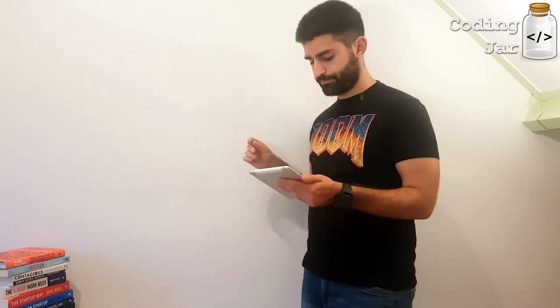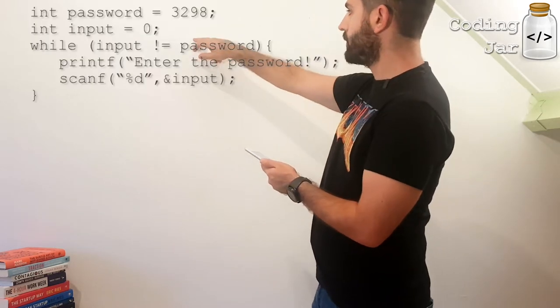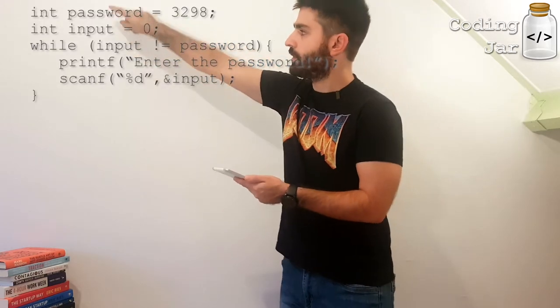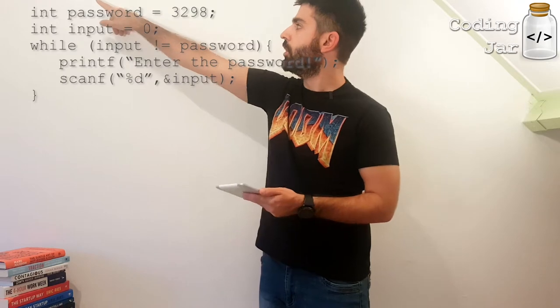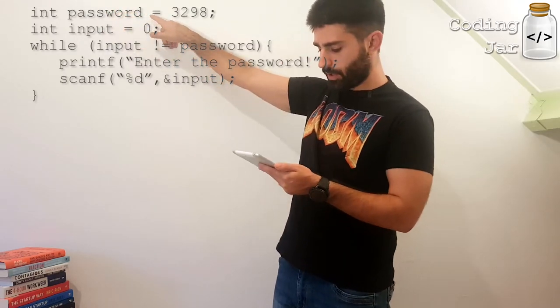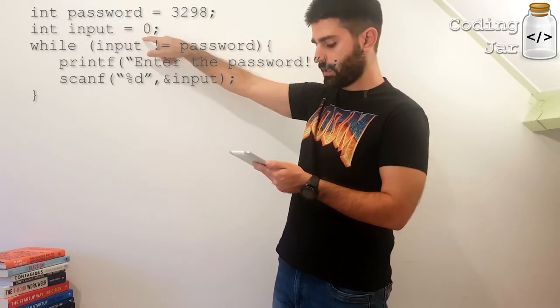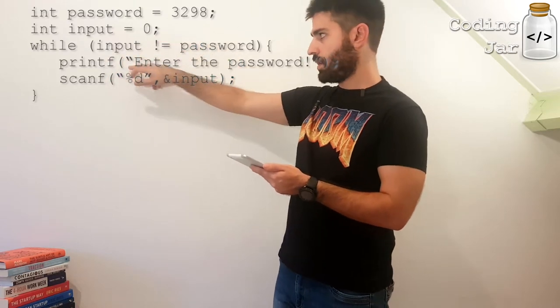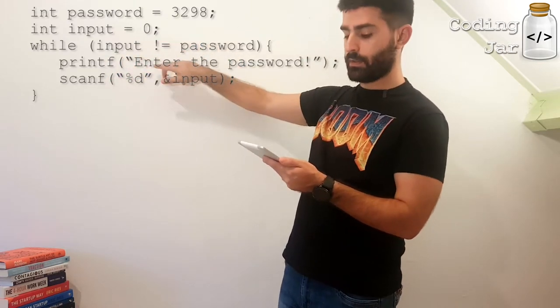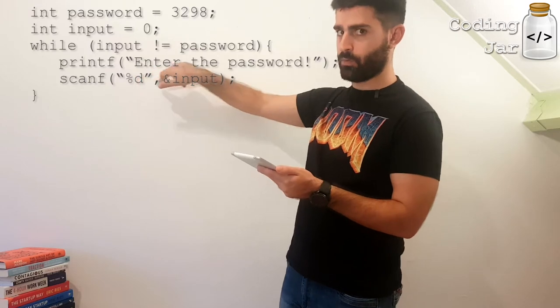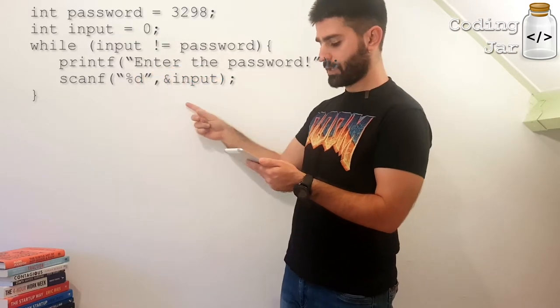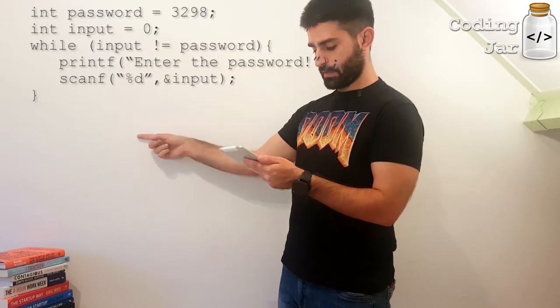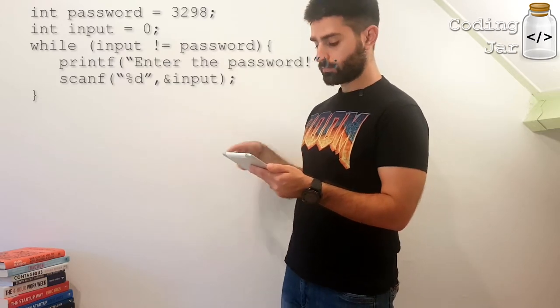But why is it useful? Let's see the following example using both printf and scanf. So int password, and let's go here, it's going to be long, where's my, somewhere here. So int password equals 3298, int input equals 0. While input is different than password, not equal to password, execute the following. Printf, enter the password, scanf %d, ampersand input.